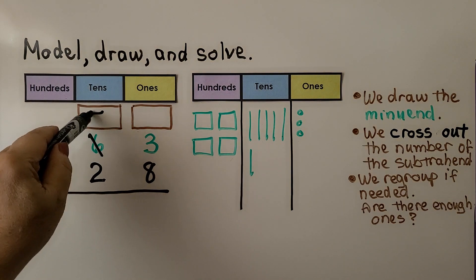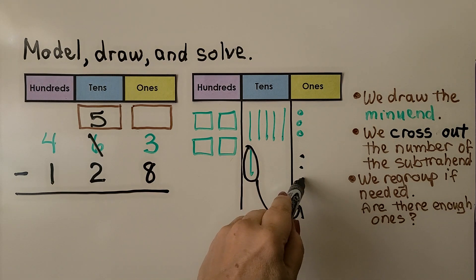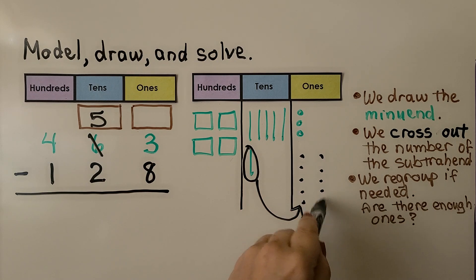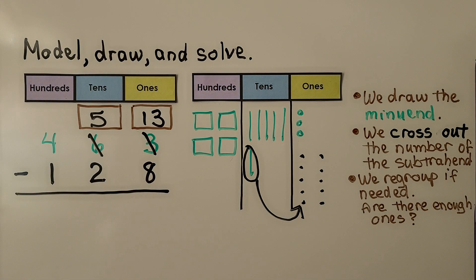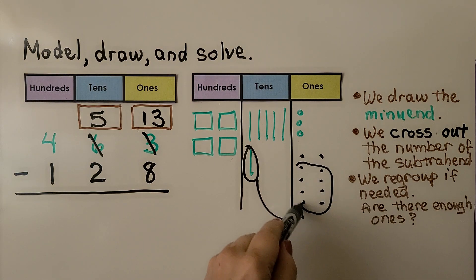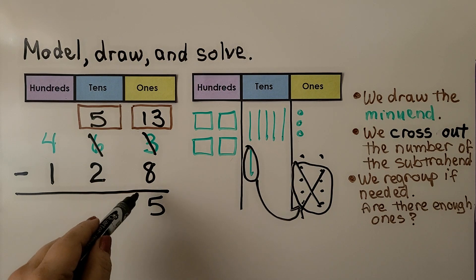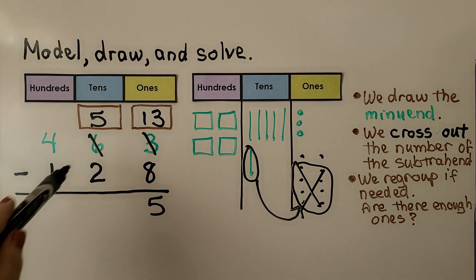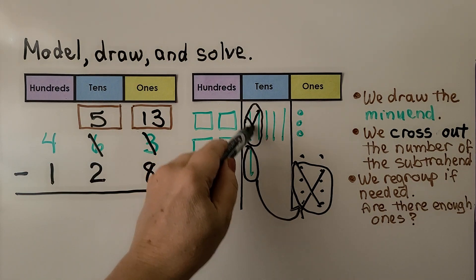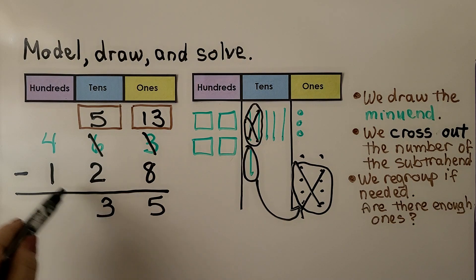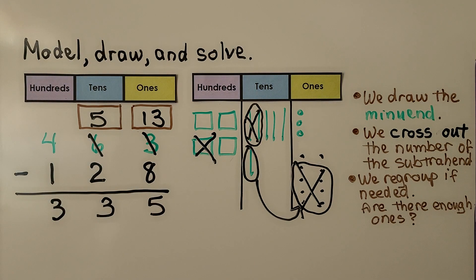This six tens is going to become five tens. We're going to take this ten and move it over as ten ones — now instead of three ones, we have thirteen ones. Now we can take eight away. If we take these eight away and cross them off, we can see we've got five ones left. Thirteen minus eight is equal to five. We need to take two tens away from the five tens, so we cross two off — we've got three tens left. We need to take one hundred away, leaving three hundreds. It's equal to three hundred thirty-five.